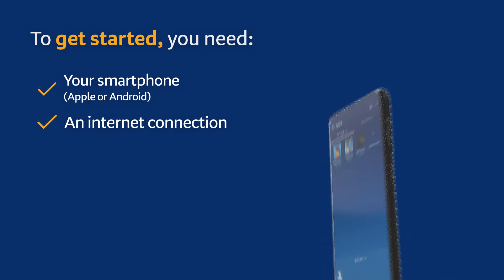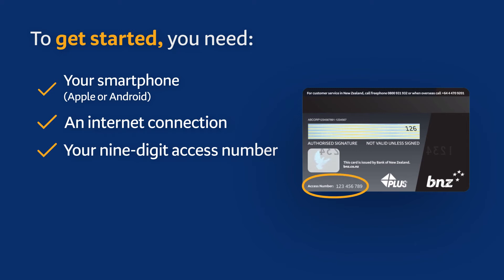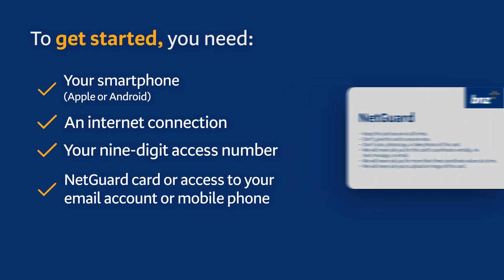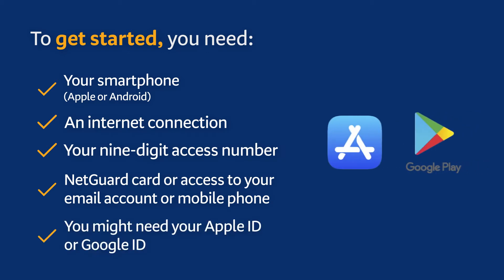You'll also need your 9-digit access number found on the back of your BNZ FPOS debit or credit card, and you'll need your NetGuard card or your email address and mobile phone number. You might also need to remember your Apple ID or Google ID, which you would have created when you set up your phone.